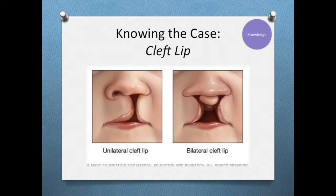Cleft lips occur in about one in every 700 births and they develop in early pregnancy when the sides of the lip and roof of the mouth do not fuse together as they should. The degree of the cleft lip can vary from a mild notching of the lip to a severe large opening from the lip up through the nose. A cleft can either be on one side, called unilateral, or both sides, bilateral. Although the exact cause is unknown, genetics as well as environmental factors play a role.